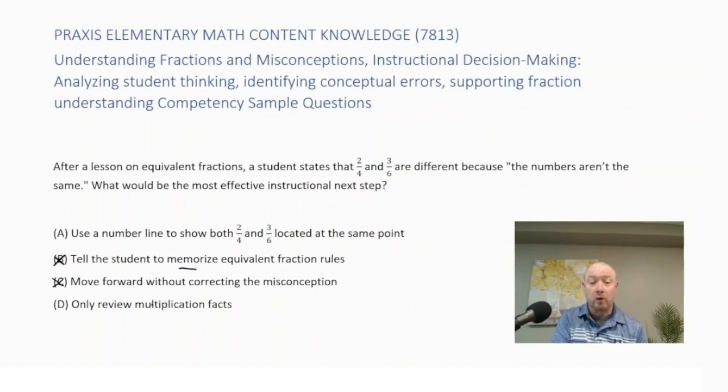Choice D, only review multiplication facts. Well, if we only review multiplication facts, we're eliminating the concept of comparing equivalent fractions. All right, so we're going to eliminate choice D. So a good strategy here would be choice A. Use a number line to show that 2-4 and 3-6 are located at the same point on the number line. So they must be equivalent. So the correct answer is choice A.